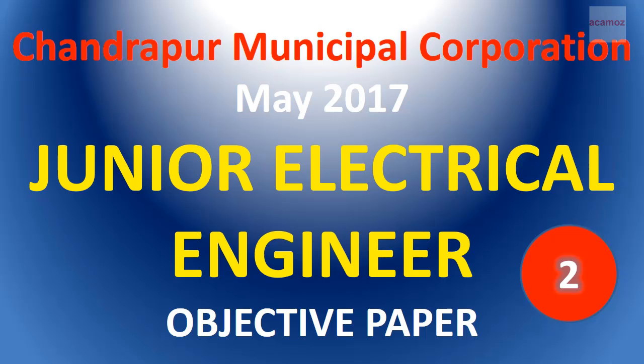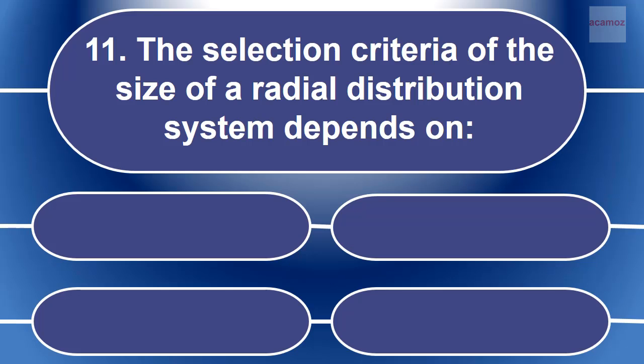Junior Electrical Engineer Objective Paper, May 2017, Part 2. The selection criteria of the size of a radial distribution system depends on.